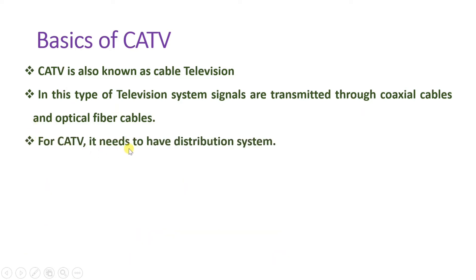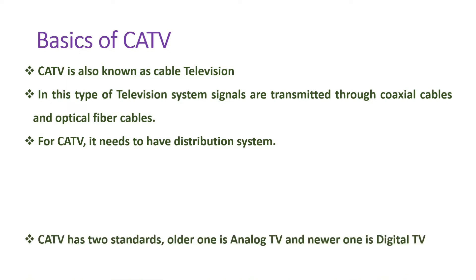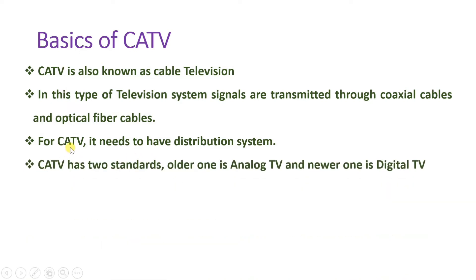For CATV, it needs to have a distribution system. Distribution means there are multiple users, and at different distances we need amplification of the signal. I will explain why there is a need for a distribution system in CATV. CATV has two different standards: the older one was analog TV, and nowadays the newer one is digital TV. Previously in cable television, people had analog television, but nowadays there is digital television with cable TV.